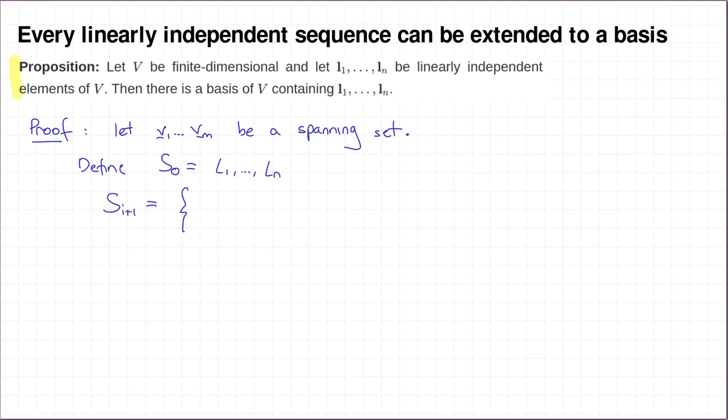Now, for each i from 1 up to M, we define Si to be one of two possibilities. So we will define this to be just the same as what Si-1 was if Vi is in the span of Si-1, and Si-1 followed by Vi in the case that Vi is not in the span of Si-1.